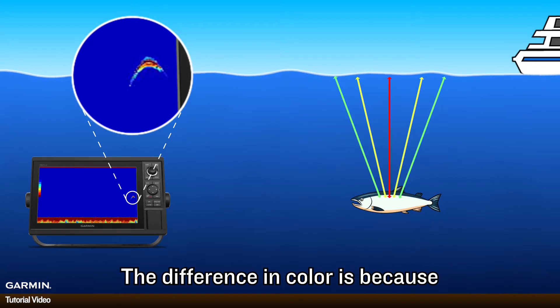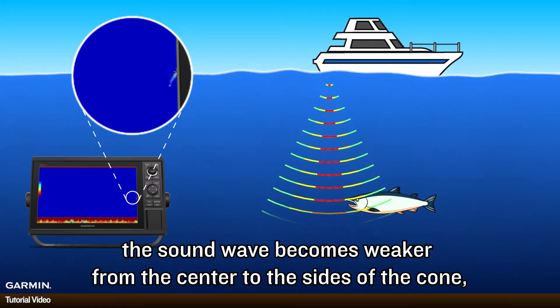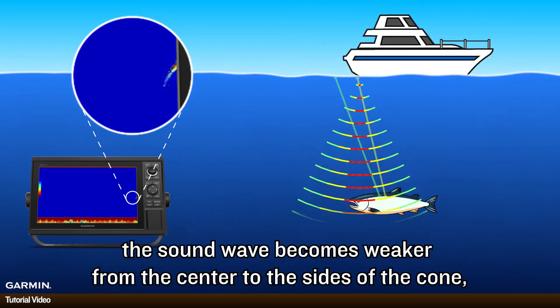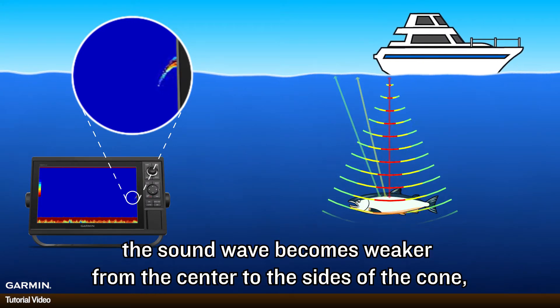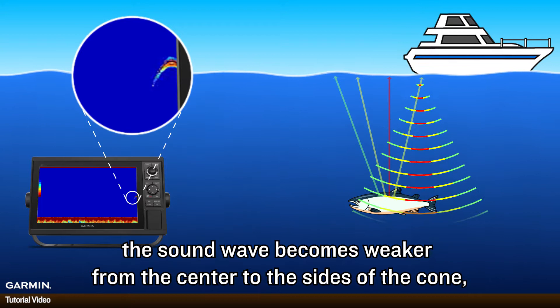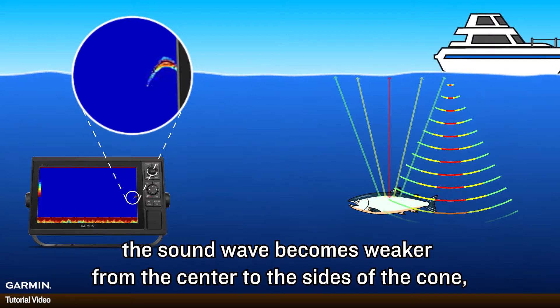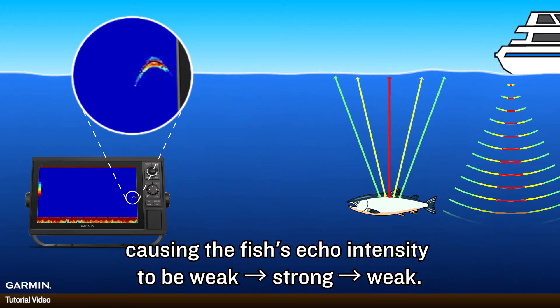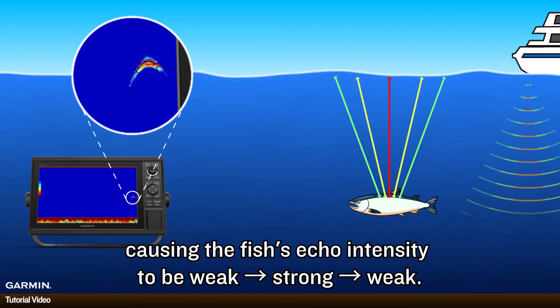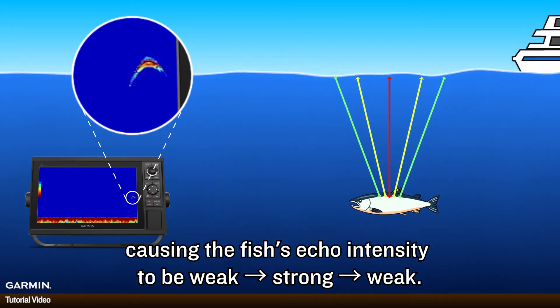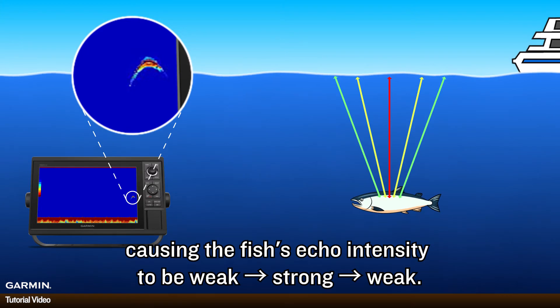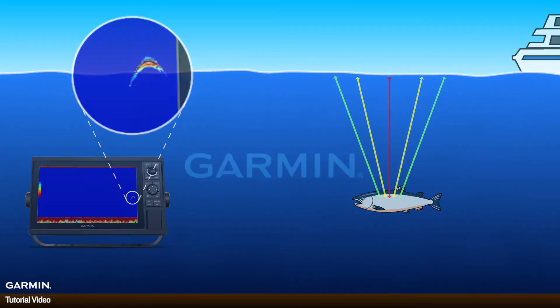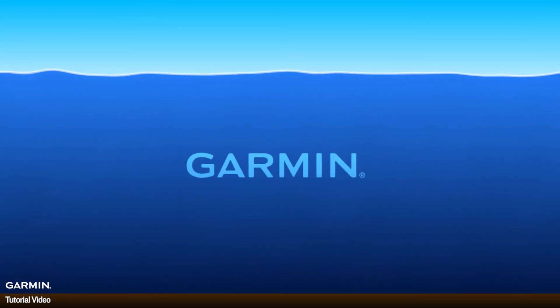The difference in color is because the sound wave becomes weaker from the center to the edge of the cone, causing the fish's echo intensity to be weak, then strong, then weak.